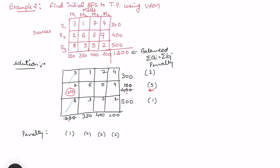We repeat the process and recalculate penalties. In the first row, the first column is crossed off, so the least is now 1 and the next least is 4 — the difference is 3. In the next row the difference is 1 (5 and 6), and in the third row it is 1 (2 and 3). The first column gets a dash since it's exhausted. Penalties for other columns remain unchanged. The highest penalty now corresponds to the first row with a penalty of 3.